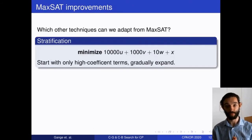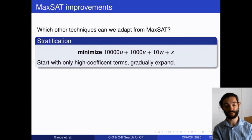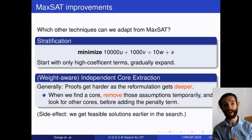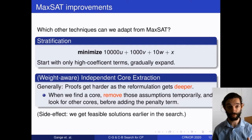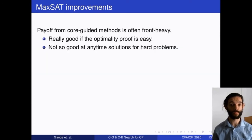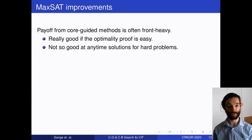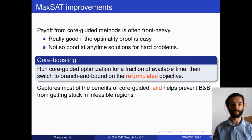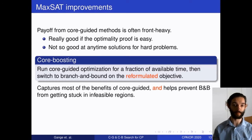There are other max-SAT improvements we can adopt directly: stratification, where we solve high-coefficient terms first and gradually expand, and independent core extraction, where we delay adding penalty terms until we've run out of cores — both very effective. The other big one is core boosting: since core-guided solvers are usually not great at generating anytime solutions, we run core-guided optimization for a proportion of our search time, then switch back to branch and bound using the reformulations already done.